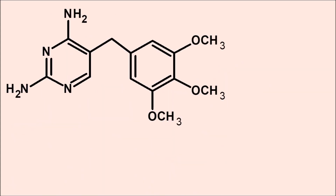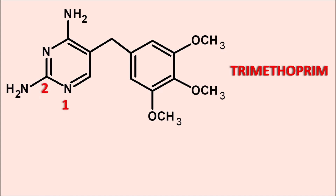So this is the structure of the first drug, trimethoprim. Here it is having the trimethoxy groups, so that's why it has the name 'trimetho', and 'prim' indicates it is having the pyrimidine nucleus. So here the pyrimidine is the main nucleus. Starting the numbering: 1, 2, 3, 4, and 5. So it is a 2,4-diaminopyrimidine with a side chain at the fifth position.